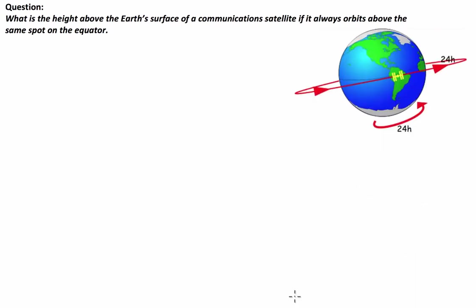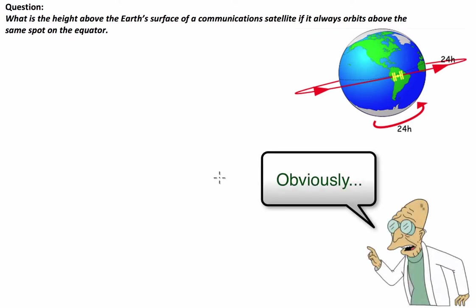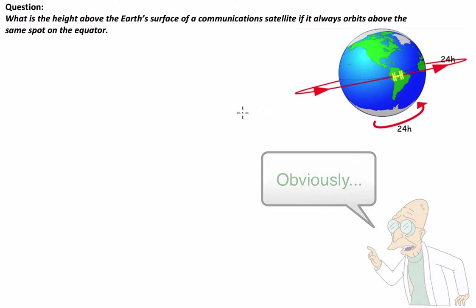There are two main things we have to consider when doing questions of this nature. Because the satellite is always above the same spot on the equator, we refer to this type of satellite as a geosynchronous satellite. As a result, the period of one revolution of the satellite around the Earth is the same as the period of one revolution of the Earth,